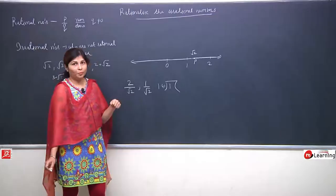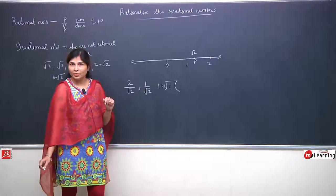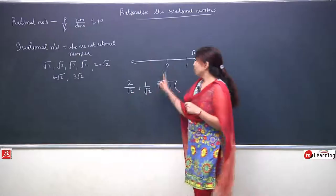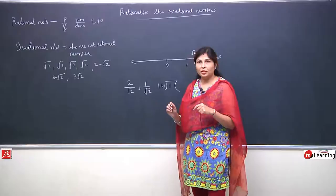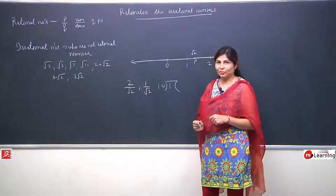When the denominator contains numbers under roots, dividing and then plotting on a number line is very difficult for us. So we need to remove the root - the square root - from the denominator. We need to remove the irrational number and convert it to a normal rational number. The purpose is to remove the roots from the denominator, to make it a rational number - this is called rationalization.